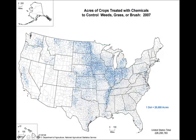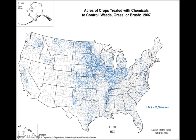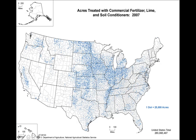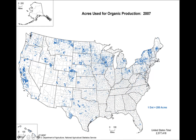If we look at the acres of crops treated with chemicals, it's pretty abundant especially in the central portion of the United States — the soybean, grain, and corn farming areas. Here are areas treated with fertilizers and soil conditioners; the two maps kind of match one another, both in the same regions. And here's the acres of organic production — going back to 2007, these maps aren't updated every year, but we do have a decent amount. One problem with organic farming is that you can't have an organic farm right across the street from a conventional farm, because any cross-contamination of pesticides or herbicides from the neighboring farm means that organic farm is no longer considered organic.